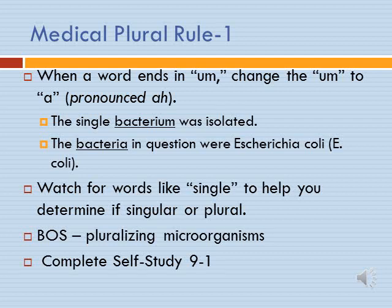The single bacterium was isolated. The bacteria in question were Escherichia coli, or E. coli. How do we know whether to use bacterium or bacteria? We need to look for other words in the sentence to give us a signal. Here, the word single tells us it's singular. Also, was versus were: was if it's singular, were if there's more than one. Watch for those kinds of context words to help determine if something should be singular or plural.